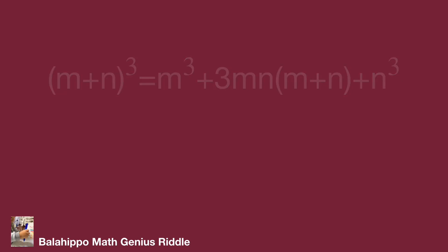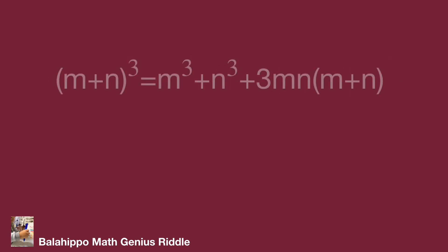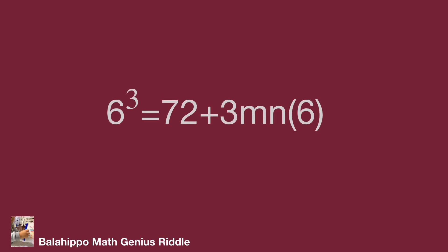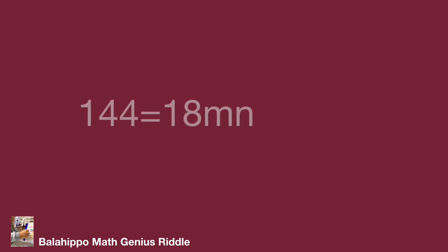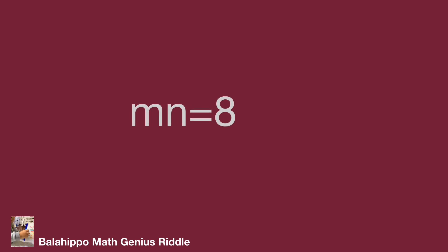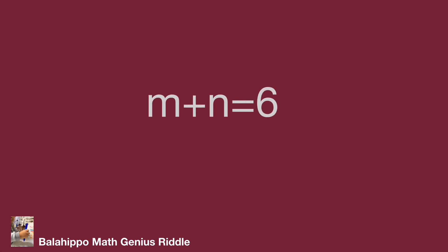Substitute m plus n by 6, and m cubed plus n cubed by 72 into the equation. So 6 cubed equals 72 plus 3mn times 6. Then 216 equals 72 plus 18mn, giving us 144 equals 18mn. So mn equals 8. The new information is mn equals 8 and m plus n equals 6.